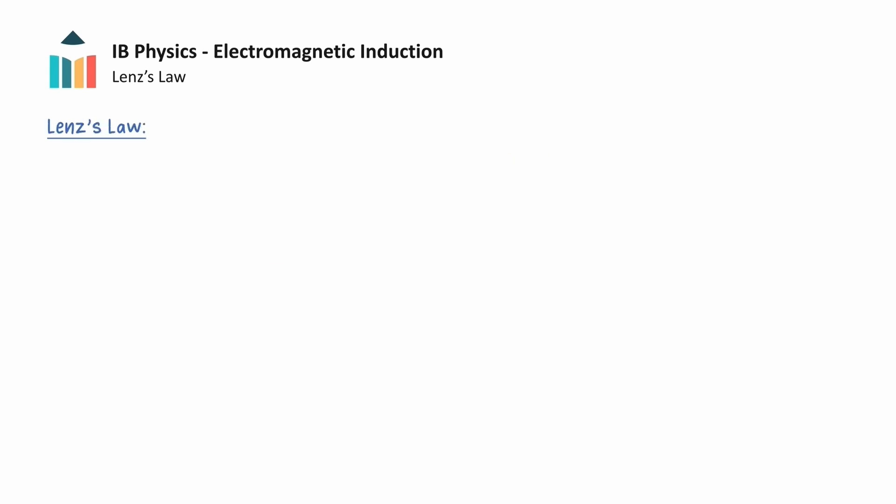We can calculate the magnitude of the induced EMF from electromagnetic induction using Faraday's law of induction, which states that the induced EMF in a closed loop equals the negative of the rate of change of magnetic flux with time through the loop. We will delve into this equation in more detail in another video, but the objective of this video is to focus on the negative sign in this equation, which encompasses Lenz's law, and is concerned with determining the direction of the induced EMF.